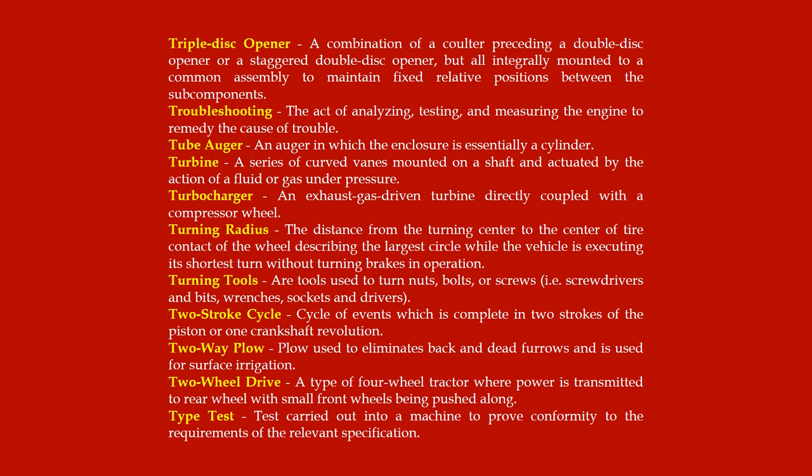Turning radius: the distance from the turning center to the center of tire contact of the wheel describing the largest circle while the vehicle is executing its shortest turn without turning brakes in operation. Turning tools: tools used to turn nuts, bolts, or screws; examples include screwdrivers and bits, wrenches, sockets, and drivers. Two-stroke cycle: a cycle of events which is complete in two strokes of the piston or one crankshaft revolution. Two-way plow: a plow that eliminates back and dead furrows and is used for surface irrigation. Two-wheel drive: a type of four-wheel tractor where power is transmitted to the rear wheels, with small front wheels being pushed along.